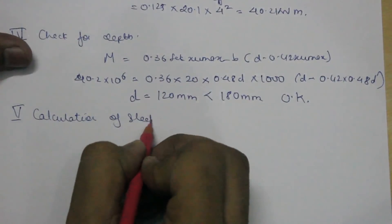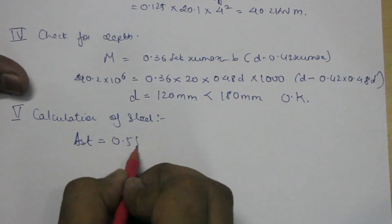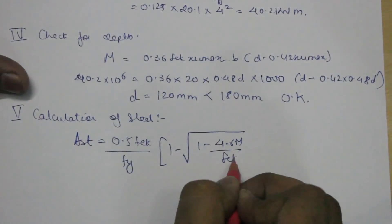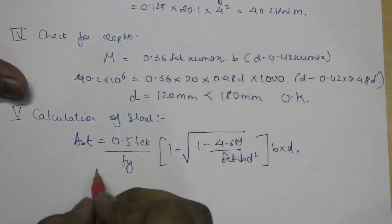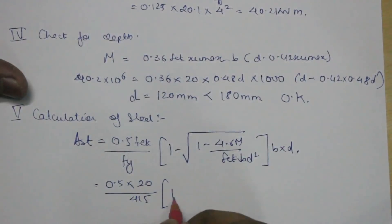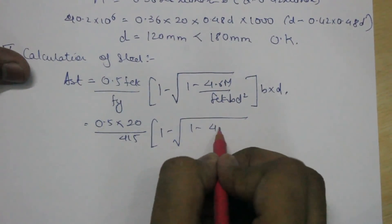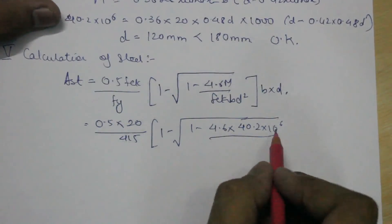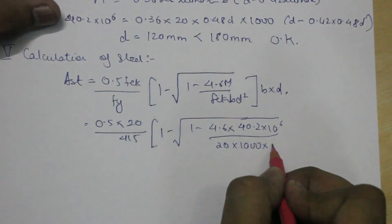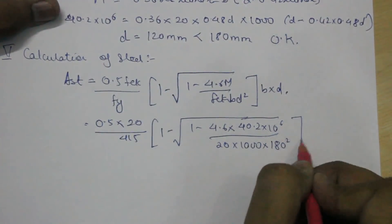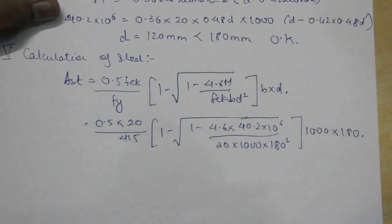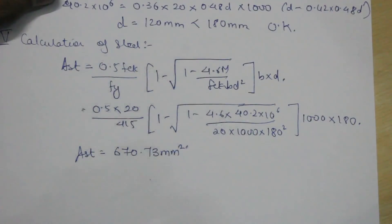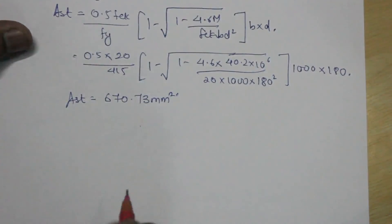Fifth step would be to calculate the area of tension steel. Our basic formula which we used for beams: 0.5 fck by fy, 1 minus under root of 1 minus 4.6 times maximum bending moment, 40.2 into 10 raise to 6, upon 20 into 1000 multiplied by the effective depth which is 180 square, times 1000 times the effective depth which is 180. So the area of tension steel is 670.73 millimeter square.